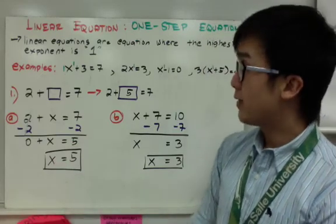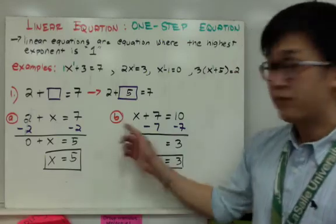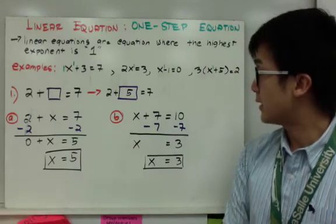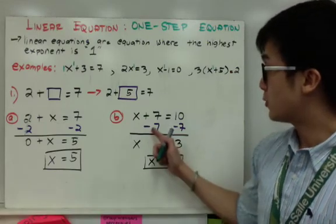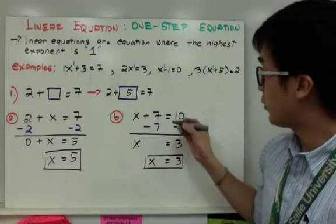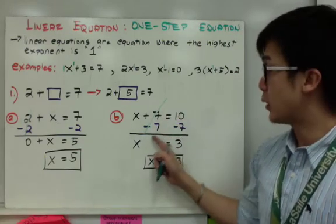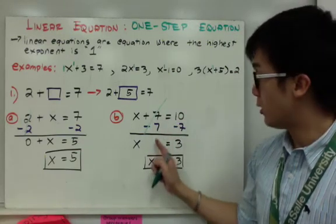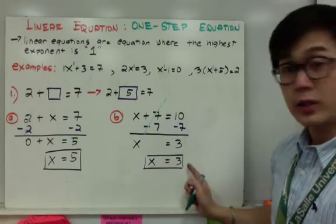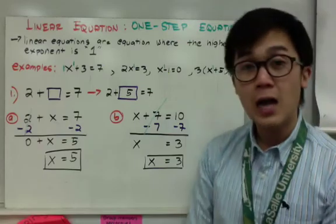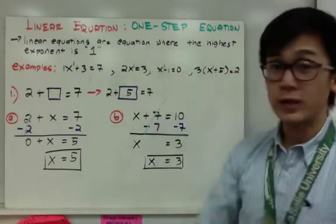We've solved the linear equation for x. In similar fashion, if we have x plus 7 equals 10, to get rid of 7 we subtract 7 from both sides. 7 minus 7 is 0, and 10 minus 7 equals 3. So x equals 3. This is how we solve a linear equation using one step.